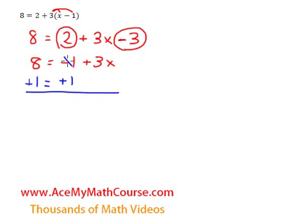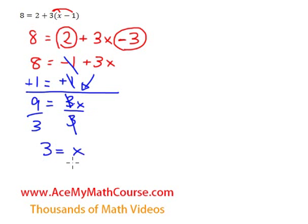Negative 1 plus 1 is 0, 8 plus 1 is 9, and then I can just bring down 3x and divide both sides by 3. That'll be the next step, right? By dividing both sides by 3, we get rid of this 3 that is multiplying the x. 9 divided by 3 is 3. So x is equal to 3.